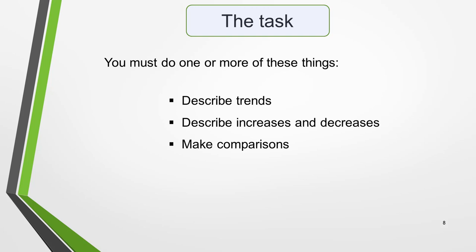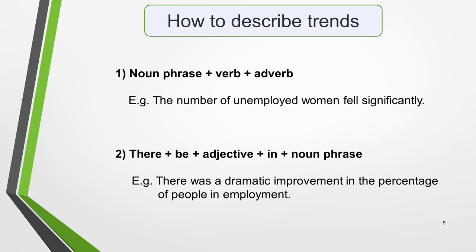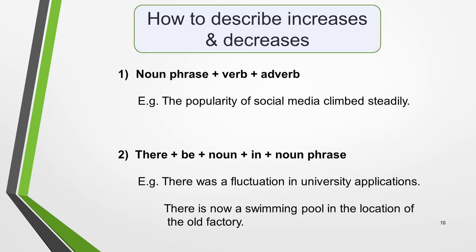There are specific sentence structures for each of these. The two most useful grammatical structures for describing trends are: 1) Noun phrase + verb + adverb, e.g. 'The number of employed women fell significantly.' 2) There + be + adjective + in + noun phrase, e.g. 'There was a dramatic improvement in the percentage of people in employment.' The two most useful structures for describing increases and decreases are: 1) Noun phrase + verb + adverb, e.g. 'The popularity of social media climbed steadily.' 2) There + be + noun + in + noun phrase, e.g. 'There was a fluctuation in university applications.'